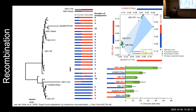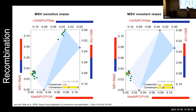In resistant host varieties, the population converges very rapidly to the optimal genomic region, while in sensitive varieties there is broader sequence space exploration. This means resistant hosts create strong bottlenecking, while sensitive hosts allow more exploration — and that's likely where new variants emerge.